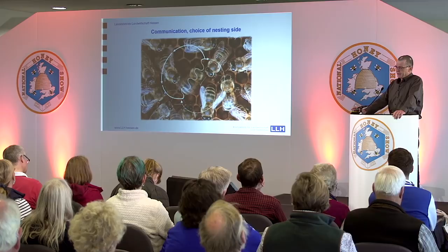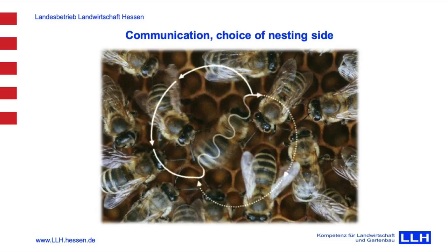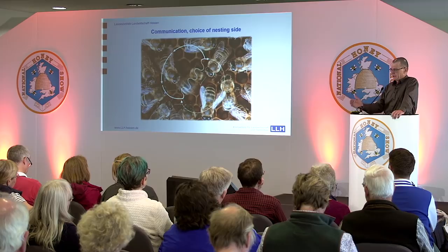Communication. There is this waggle dance, which you all know, and which is fantastic to observe — a good study object for children to understand how social organisms act. These bees can tell the direction and the distance of what they are looking for. Bees use this also when it comes to the swarming process. Weeks before swarming, the first scout bees go out searching for proper nest sites. There is communication among scouts, and at the end it's like a democratic process — all the scouts have to be convinced that the choice made is the best one, and then the swarm can go out.